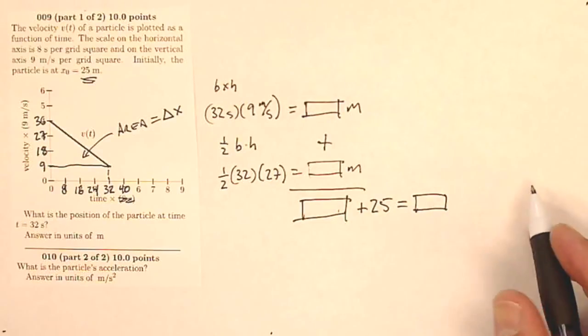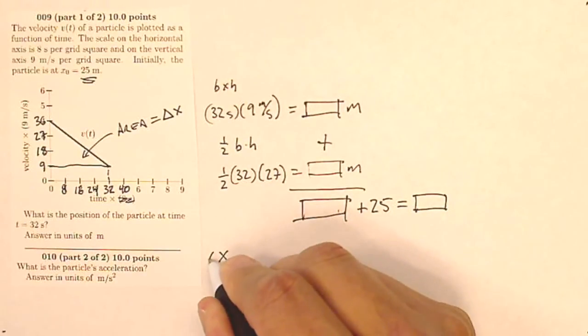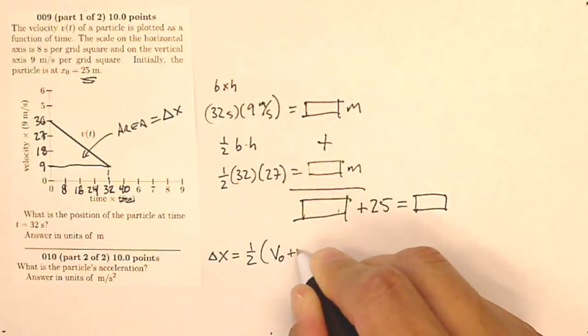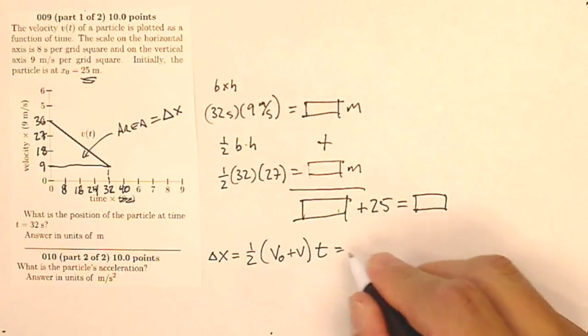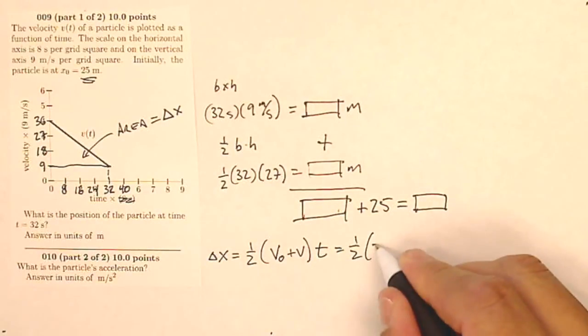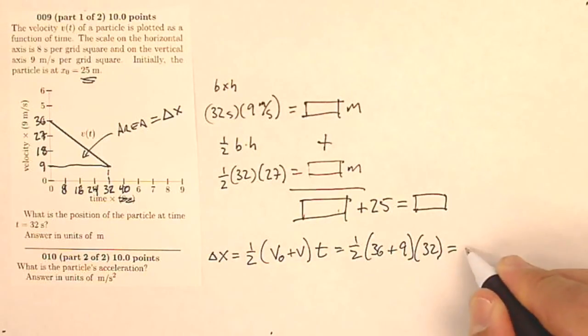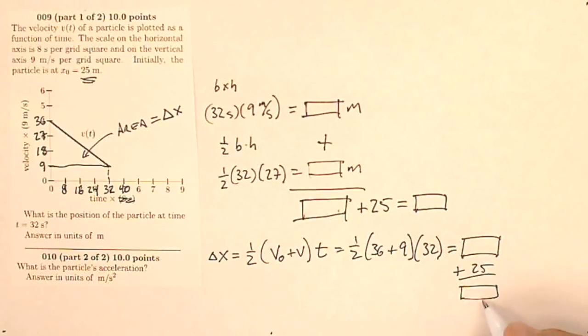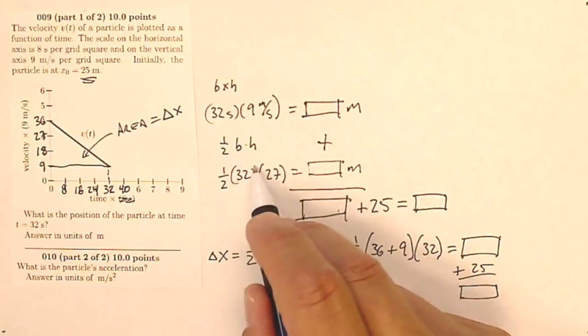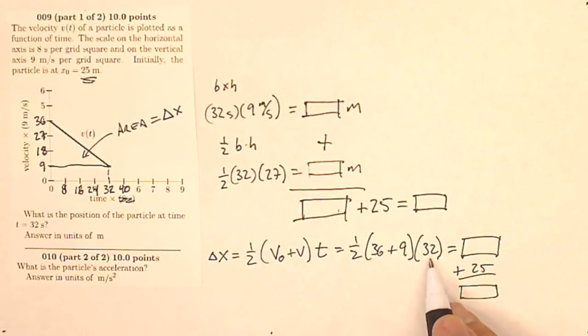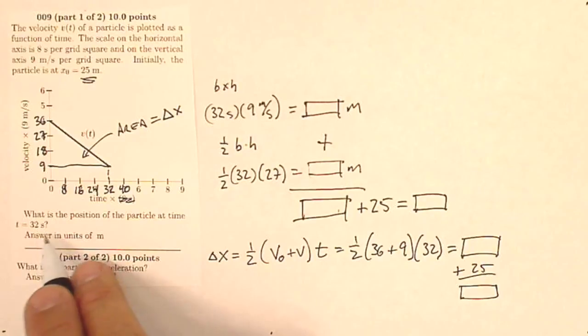The other way to do this problem would have been to say that my position or my change in position is going to be my average velocity times time. So one half my initial velocity plus my final velocity times time. Well, that's going to be one half of my initial velocity, which is 36, plus my final velocity, which is 9, times my time of 32 seconds. And when I get this answer, again, that's going to be my delta x, and I'll have to add the 25 to get my final answer. So that, you know, plus 25 will give me my final answer. So this is equivalent to this. This is the area of a triangle. This is actually the equation for an area of this shape here, the full thing all at once. It's the average height times the base. So that'll give me the position of the particle at a time of 32 seconds.